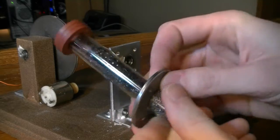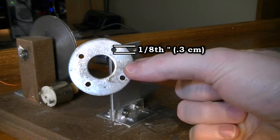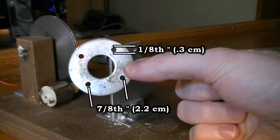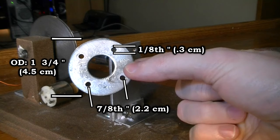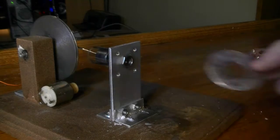This steel washer has four holes drilled through it. Each hole is one eighth of an inch in diameter and is about seven eighths of an inch apart from the next hole. The outer diameter of this washer is one and three quarters of an inch and the inner diameter is eleven sixteenths of an inch, which is just large enough to fit the Pyrex test tube through.